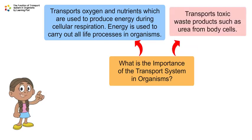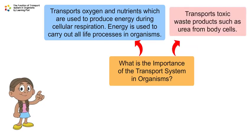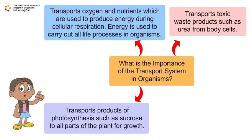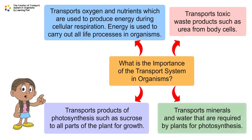It helps to transport toxic waste products such as urea from body cells. In plants, the products of photosynthesis such as sucrose are transported to all parts of the plant for growth. The transport system also helps to transport water and minerals that are required by plants for photosynthesis.